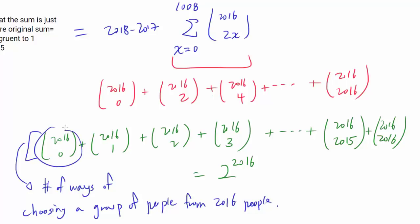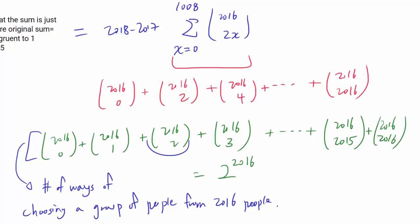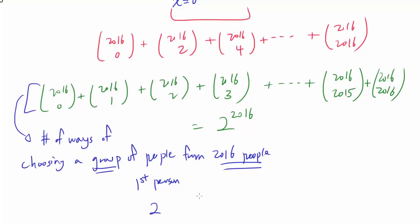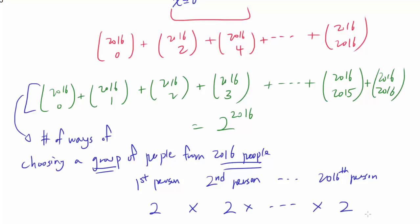This full sum represents the number of ways of choosing a group of people from 2016 people. 2016 choose 0 is choosing 0 people, 2016 choose 1 is choosing 1 person, and so on up to all 2016 people. For each of the 2016 people, they can either be in the group or not — two choices each — so multiplying 2 by itself 2016 times gives 2 to the 2016.